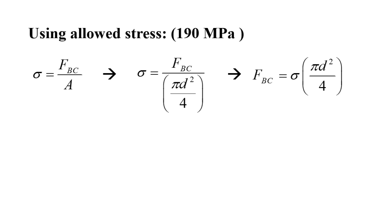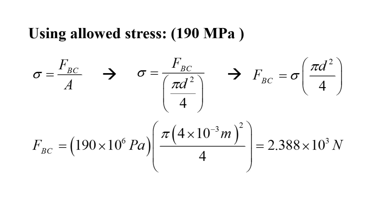So I can solve for the force. This is the maximum force allowed if the stress to be reached equals 190 MPa. So solving this equation, 190 times 10 to the 6 Pascals, and the area pi times 4 times 10 to the negative 3 meters squared over 4, that will give me 2.388 times 10 to the 3 N. So that force is due to the cable reaching the maximum stress of 190 MPa.